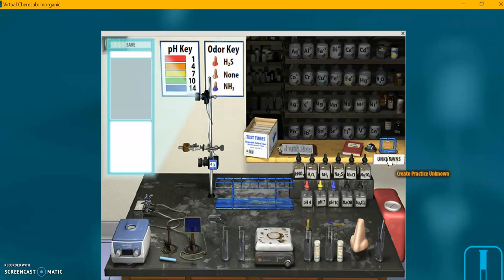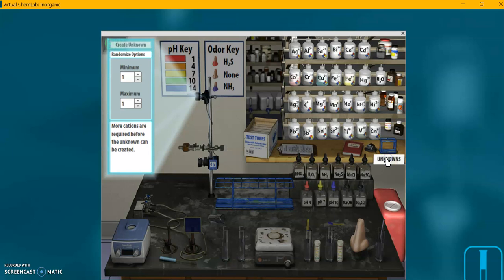And now the little hand appears, and you can create a practice unknown. So I'm going to click on the unknowns. And now we see we have activity here. All these things are live options again.